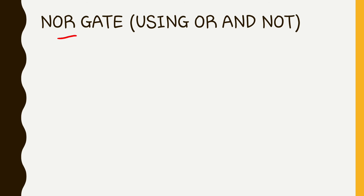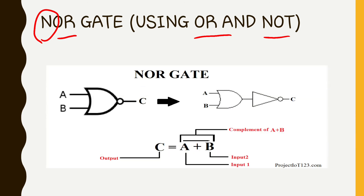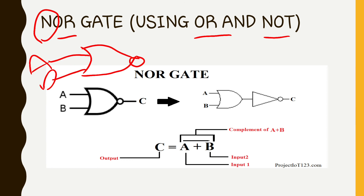Now moving from NAND gate to NOR gate — the NOR gate is made of OR gate and NOT gate. If we look at this diagram, the symbol is OR and NOT gate. The inputs are A and B, giving us A plus B through the OR gate, followed by the NOT gate.